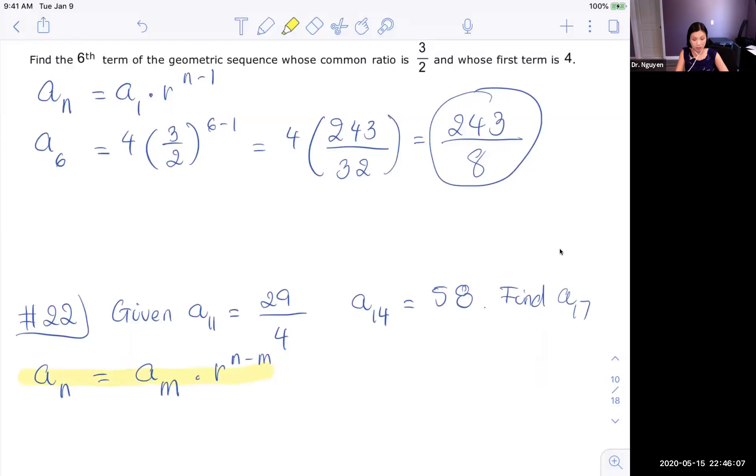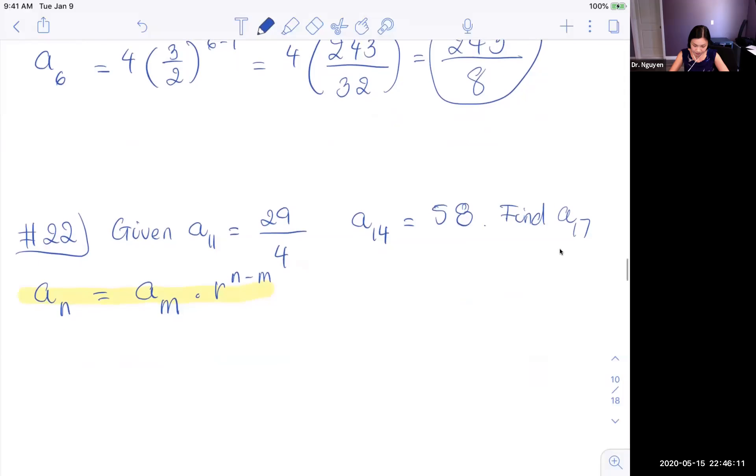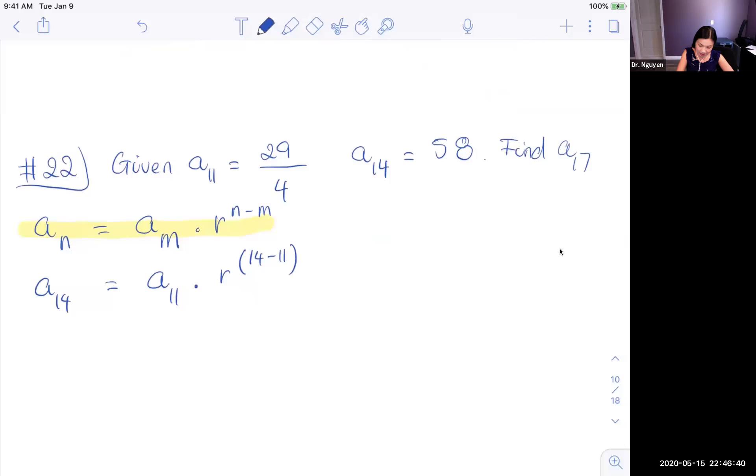So what I have is A14 = A11 times R to the 14 minus 11, which is 3. Let's put everything in. A14 is 58, A11 is 29 over 4, and then we are looking for R. So first I can always divide, and I can always take 58 divide by 29 over 4. That means I multiply by the reciprocal.